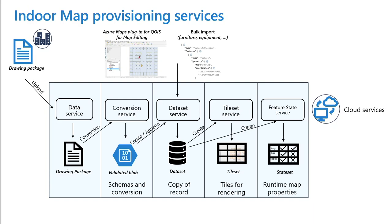Now let's do a deep dive on how the indoor mapping provisioning service works. First, we have the drawing package, which is uploaded through the data service. This will execute a conversion using the conversion service and store it in a validated block with the schemas and conversion file. Next, you can create the dataset service, which stores a copy of your record. Then you can leverage the tile set service for rendering, along with the feature state service to get runtime map properties — such as whether a room is busy, free, or booked.